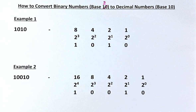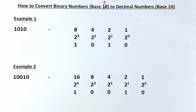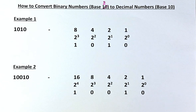So the first number we are looking at is 1, 0, 1, 0. Remember, a binary number has the digit 1 or 0. There are only 2 digits: 0 or 1.